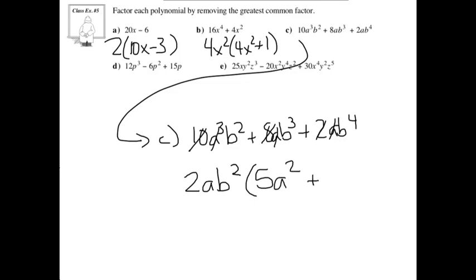Next up, we've got 8ab squared divided by 2ab squared — that's just going to give you 4b. And last, we have 2ab to the power of 4 divided by 2ab squared — you're going to be left with b squared.